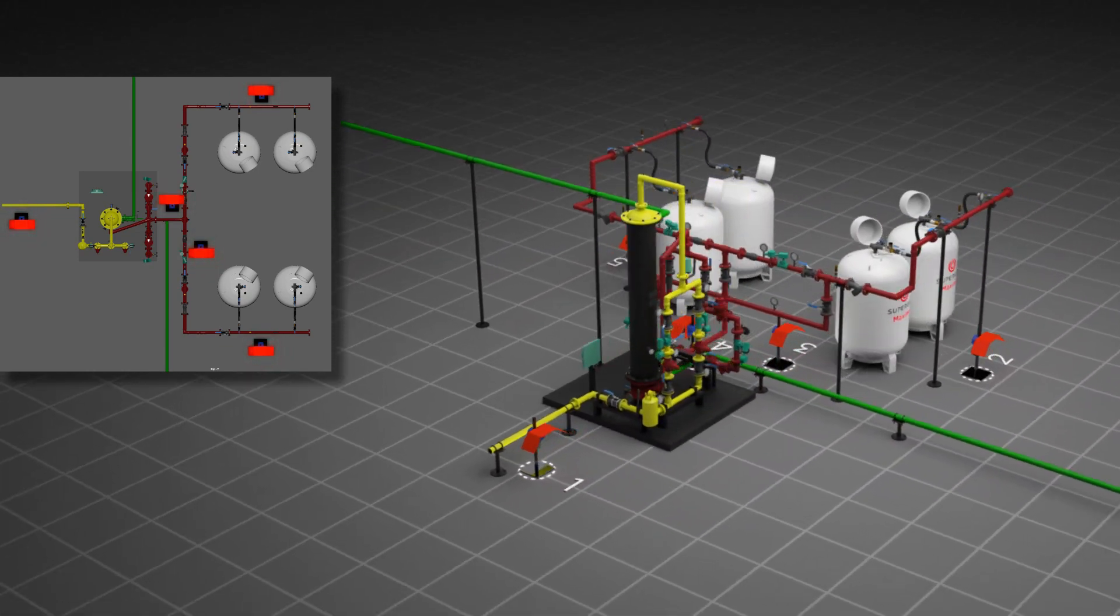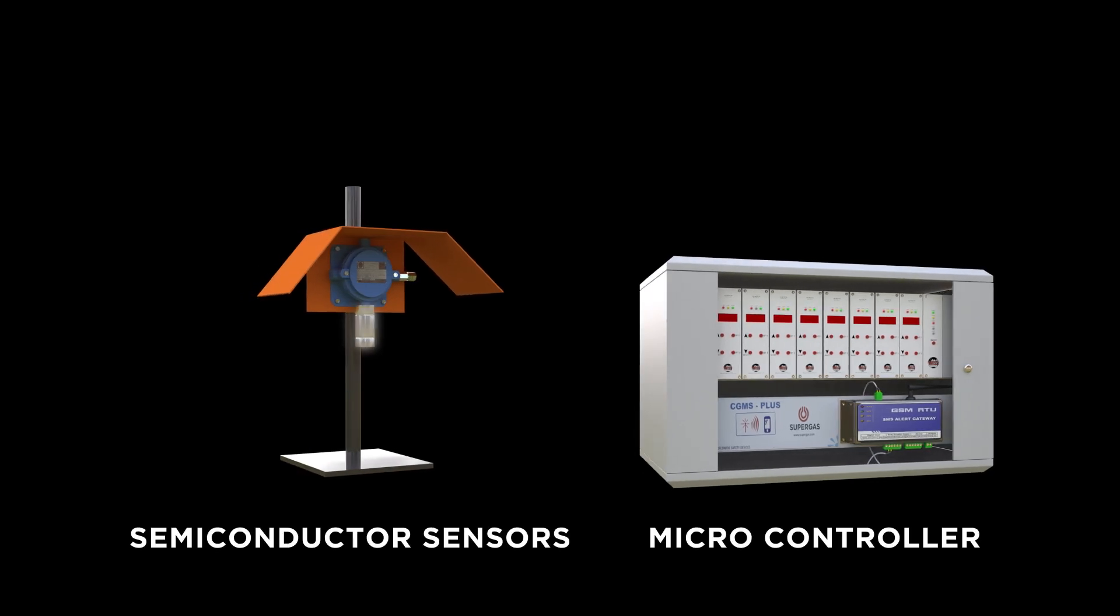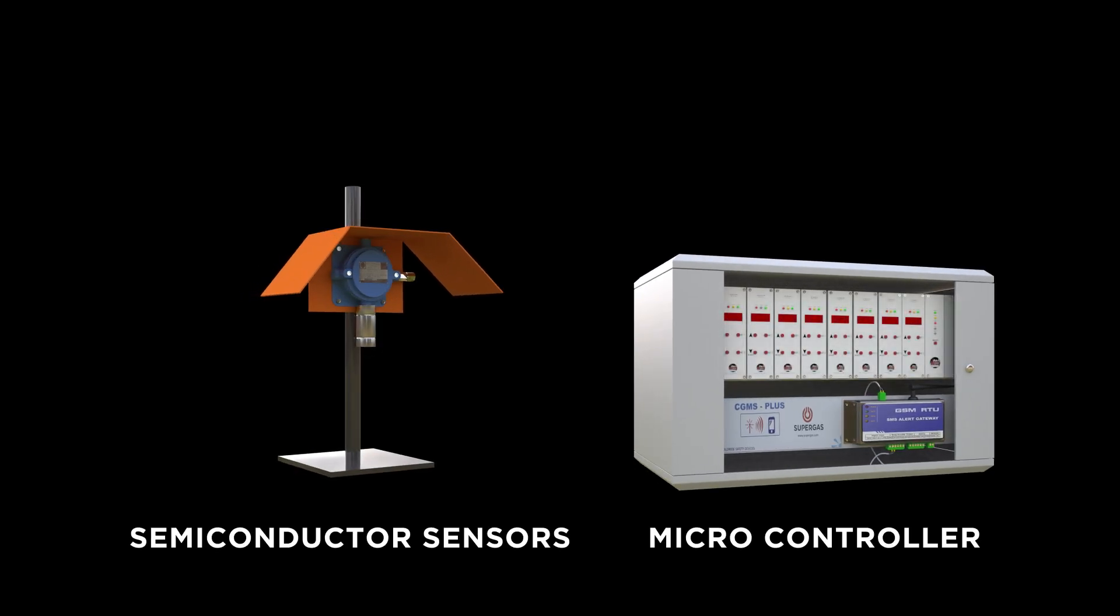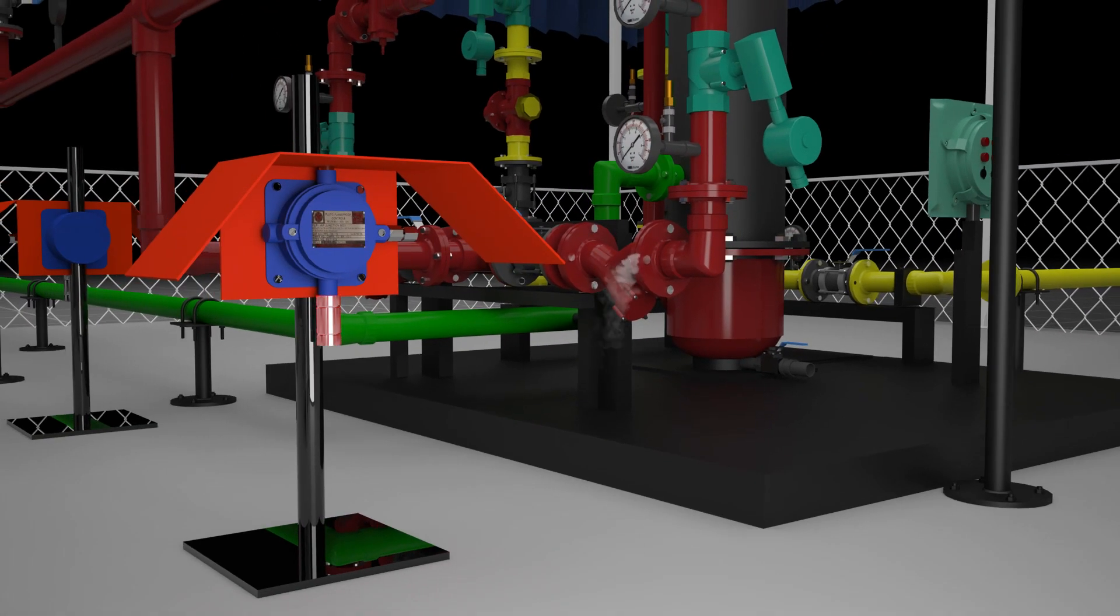CGMS Plus comprises of gas monitoring semiconductor sensors and a microcontroller in the digital control unit. It works on the Wheatstone Bridge principle. When the sensor comes in contact with LPG during the leakage, a change in resistance based on the range of explosive limit occurs.